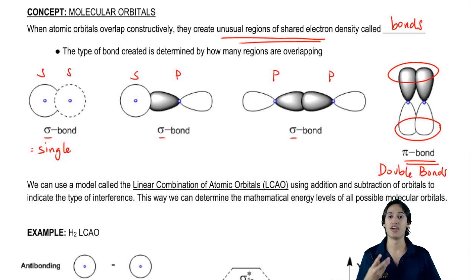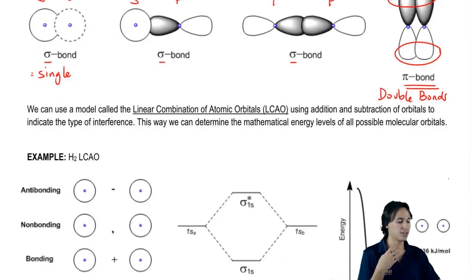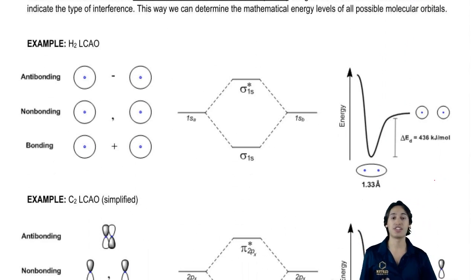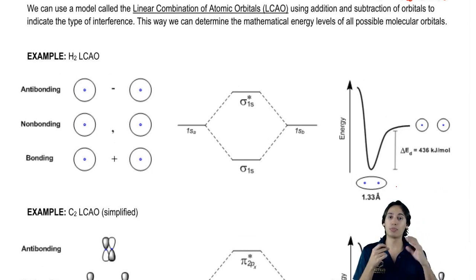Now what I want to do is switch gears and talk about a type of notation that's very common in organic chemistry. It's a model that we use to really predict what molecular orbitals are going to look like.